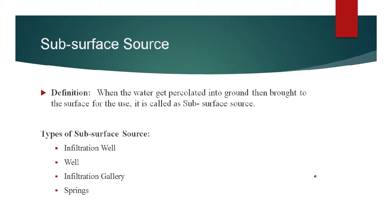Next we will see subsurface source. When the water gets percolated into the ground and is then brought to the surface for use, it is called as subsurface source. It is also called as underground water source. Sub-surface means below the ground level. A portion of rainfall infiltrates into the ground and gets stored as subsurface water. The types of subsurface source are: infiltration well, well, infiltration gallery, and springs.